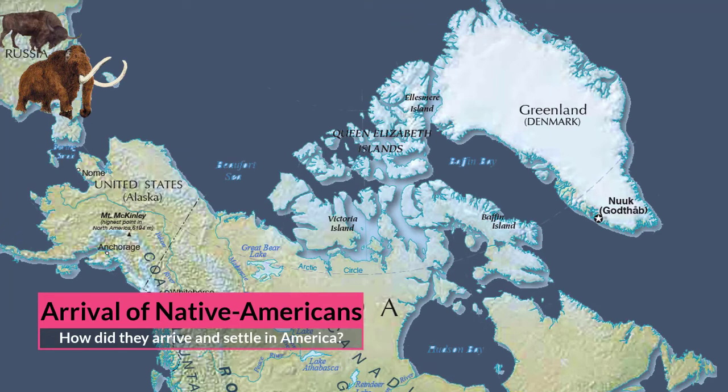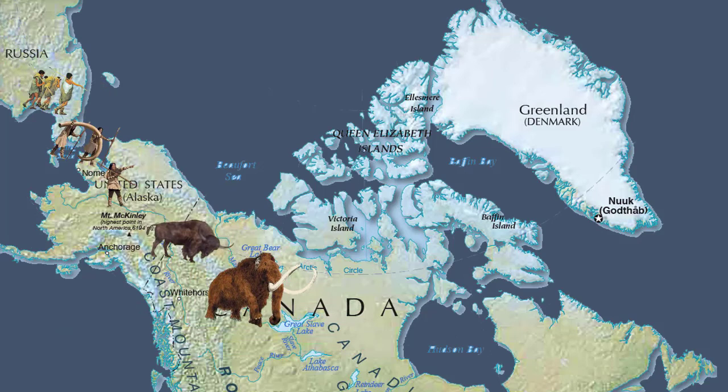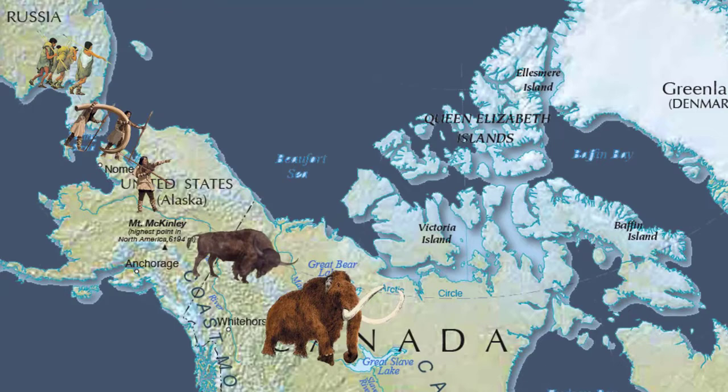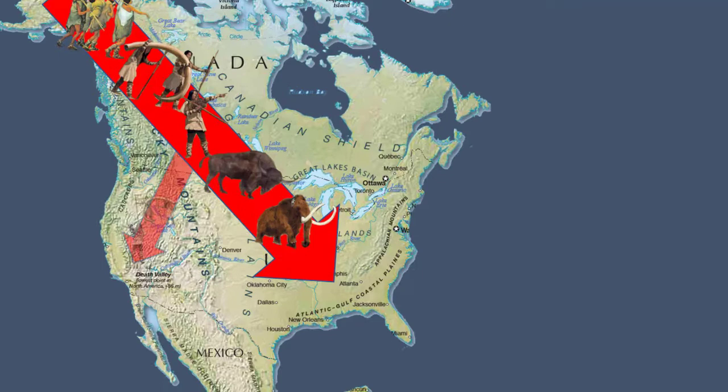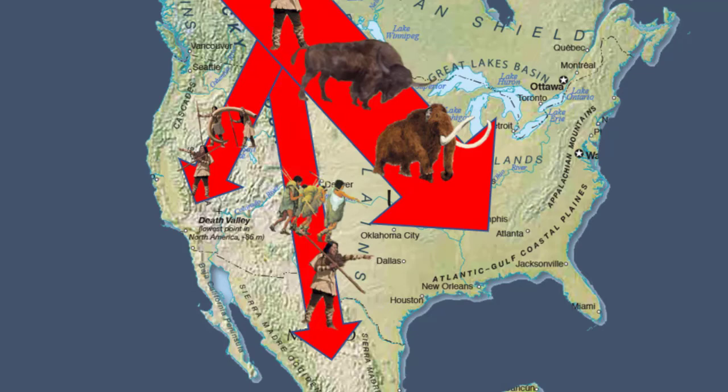It is generally believed that animal herds and other large animals migrated across the Bering Strait during the Great Ice Age when sea levels were lower and a land bridge was exposed connecting North America and Asia. They were followed by small groups of people from Asia following the animals as a source of food. The herds, and by default the people, moved along the ocean into the lower part of North America and eventually into South America. We will eventually refer to these migrants as Native Americans or Indians.